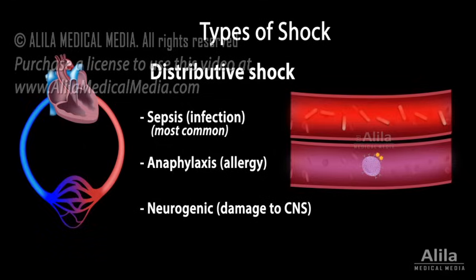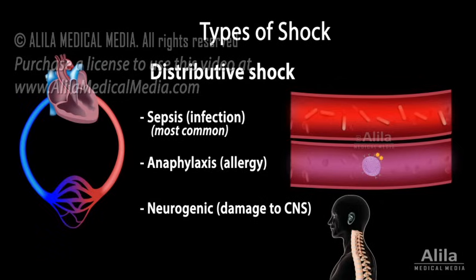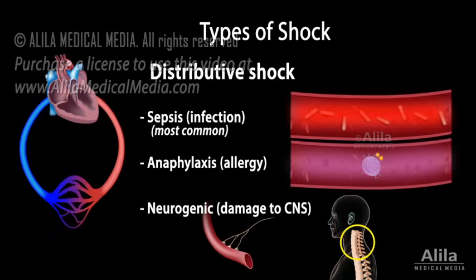Peanut allergy is a common cause of anaphylaxis. Neurogenic shock typically occurs as a result of a spinal cord injury. As the autonomic nervous system is damaged, the sympathetic tone that normally keeps blood vessels constricted is lost, causing vasodilation and hypotension.